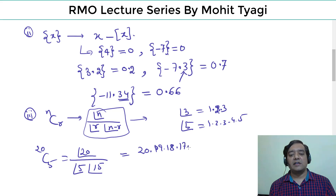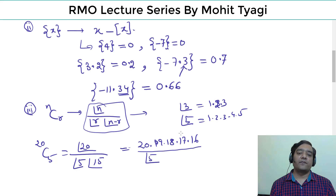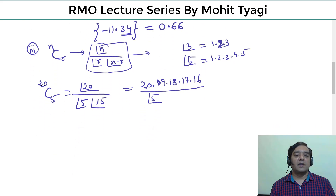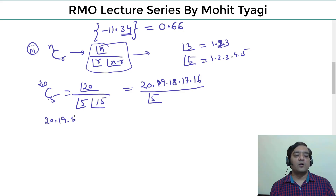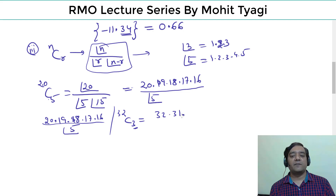Continuing with 20C5: the numerator is 20×19×18×17×16 over 5!. Similarly, for 32C3, since 3 is on the bottom, we write 3 terms from 32 downward in the numerator and 3! in the denominator.